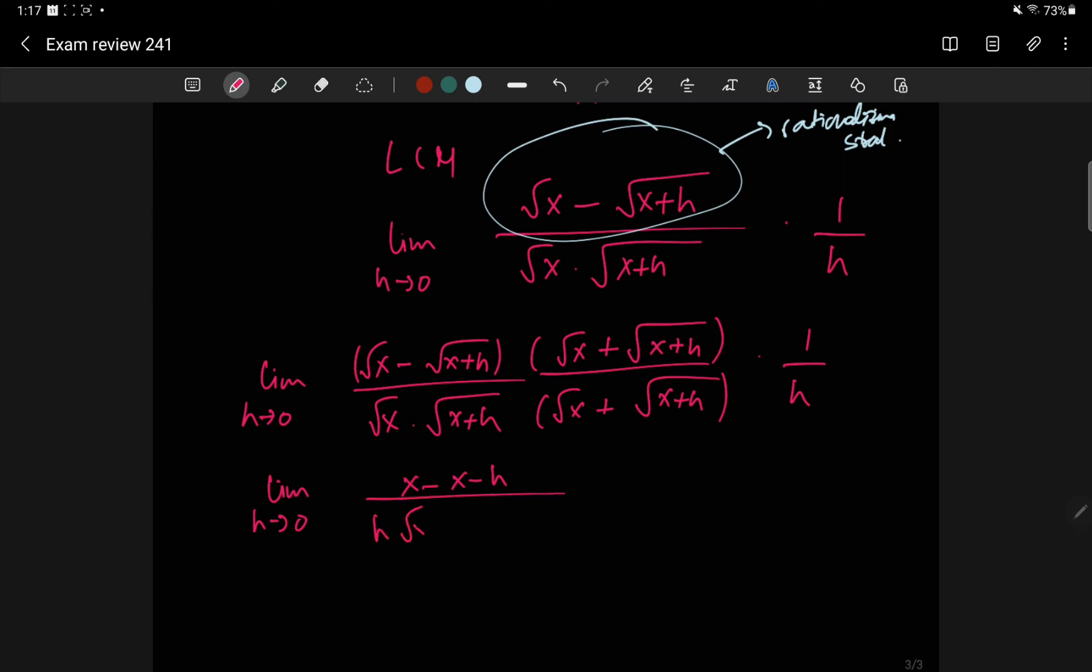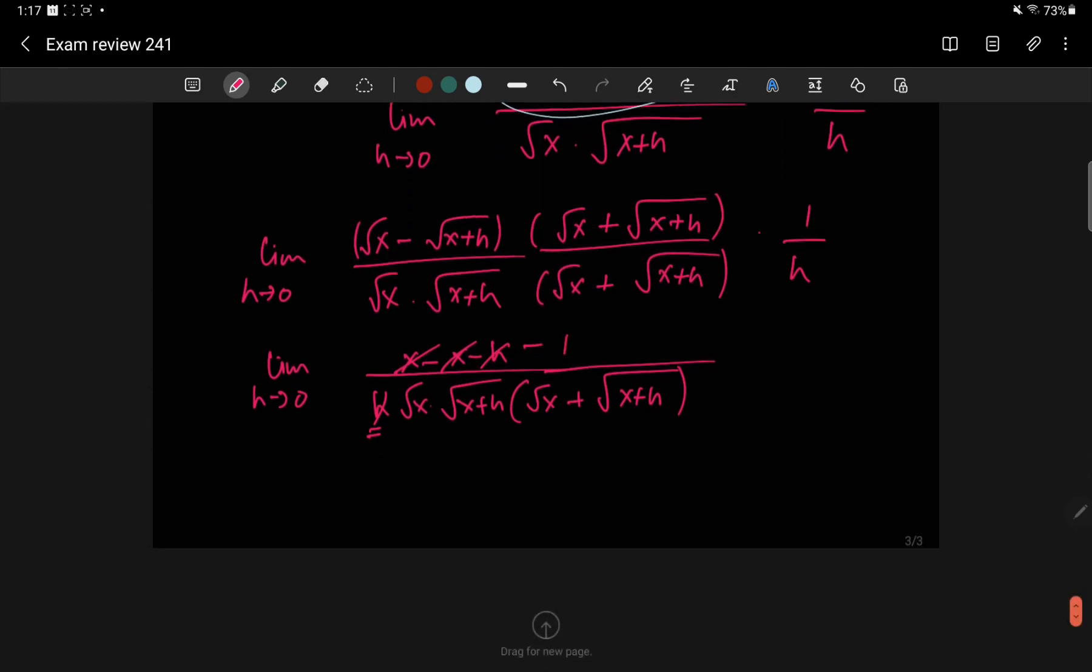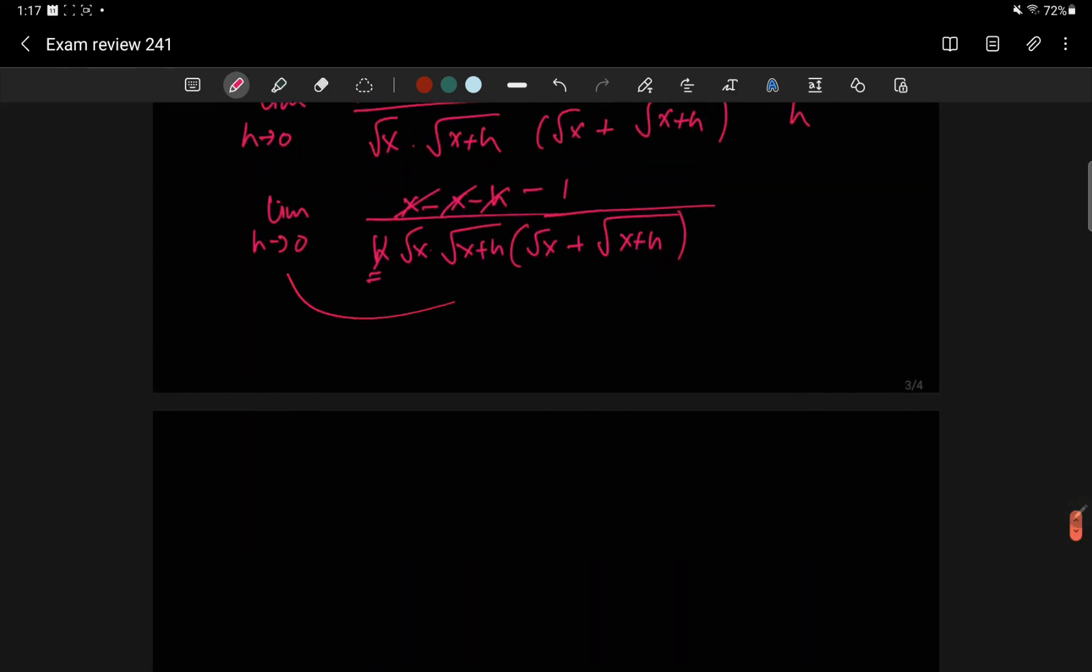And on the bottom, we have this x. We have a root x. We have a root x plus h. We have a root x plus root of x plus h, which is all fine because none of these are giving me a division by zero. The only problem is this h, which gets sorted out. Once that gets sorted out, I can plug in this. So I have negative 1, I have a root x, another root x, and a root x plus a root x. So root x times root x, that's x, and 2 root x. So that's negative 1 over 2x to the 3 over 2.